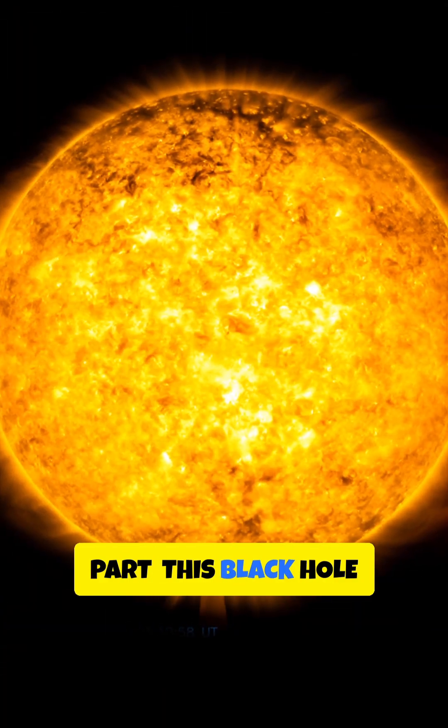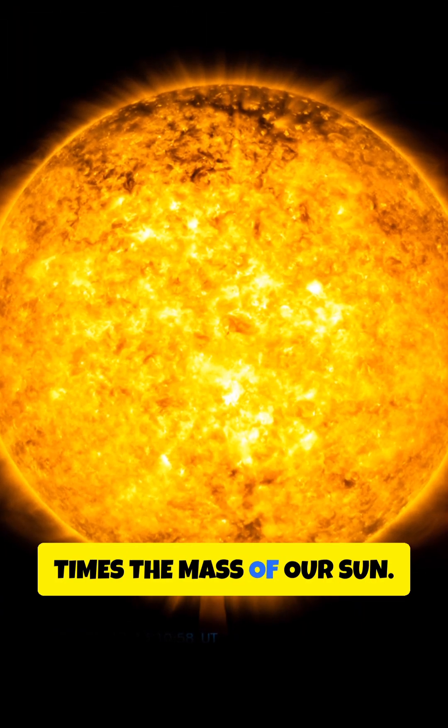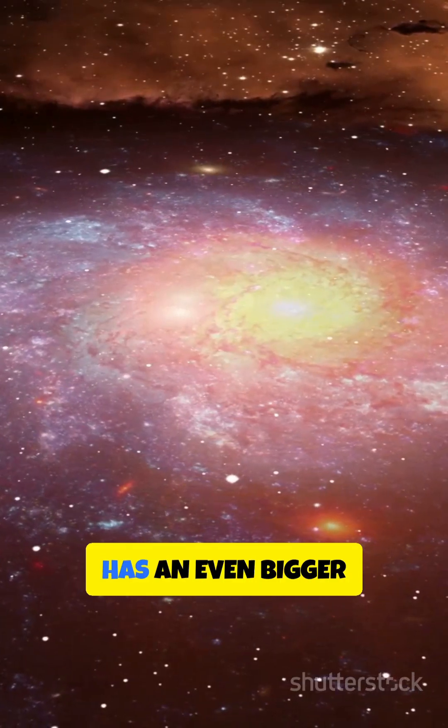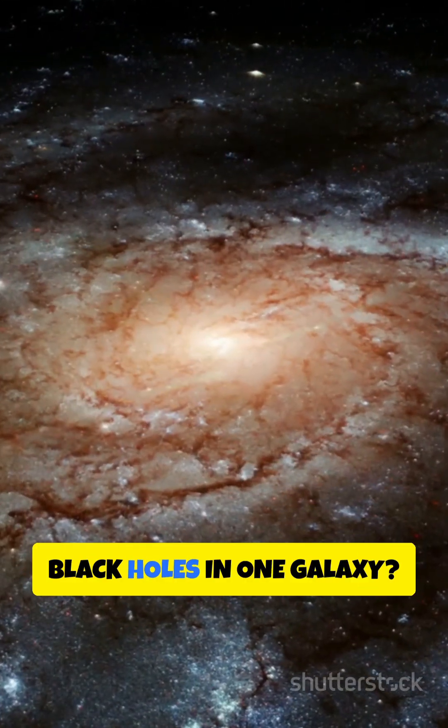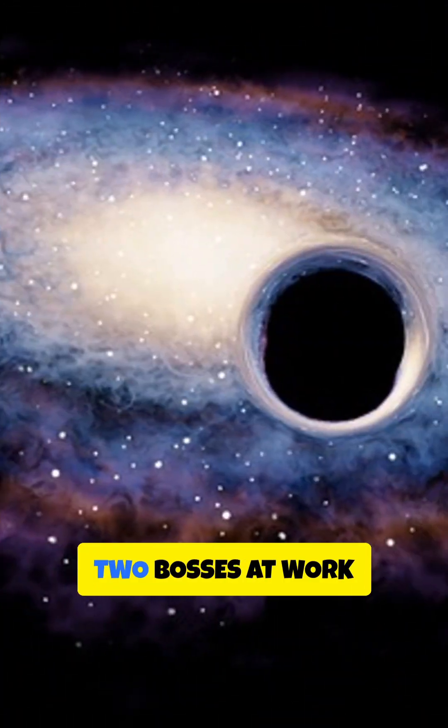But here's the wild part. This black hole is just one million times the mass of our sun. The galaxy's center has an even bigger one, 100 million times the sun. Two supermassive black holes in one galaxy. That's like having two bosses at work who don't even talk to each other.